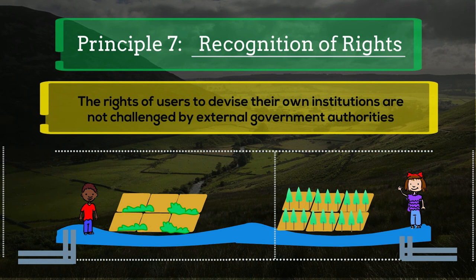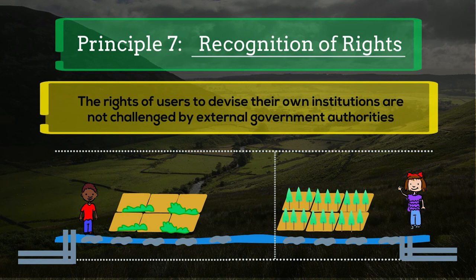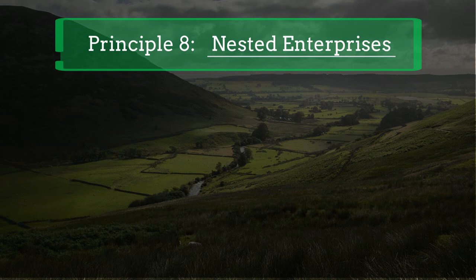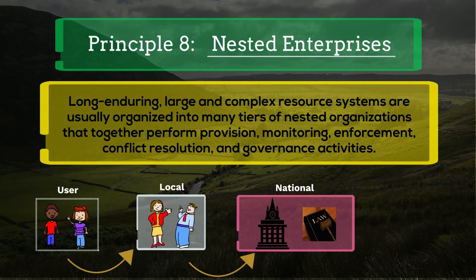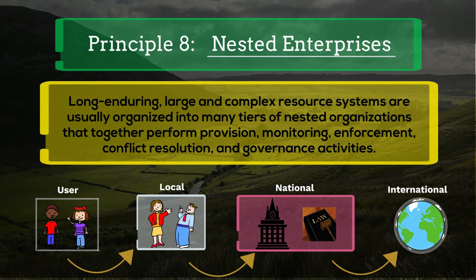And finally, Principle 8: Nested Enterprises. This principle recognizes that long-enduring, complex resource systems are usually organized into many tiers of nested organizations that together perform provision, monitoring, enforcement, conflict resolution, and governance activities. By nesting enterprises within one another, users can take advantage of many different scales of organizations to better govern their resources.